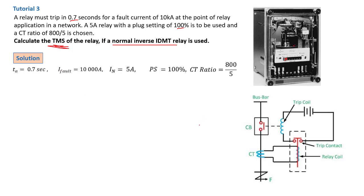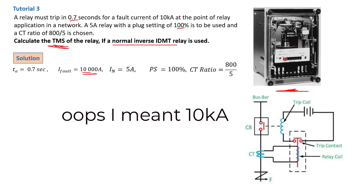An IDMT relay — Inverse Definite Minimum Time relay — is what you see here on screen. It is inverse precisely because it operates in a counter direction with the current regarding timing. When the fault current stands at 10 kilo-amps, the relay must trip faster — here that is 0.7 seconds, which is extremely fast.